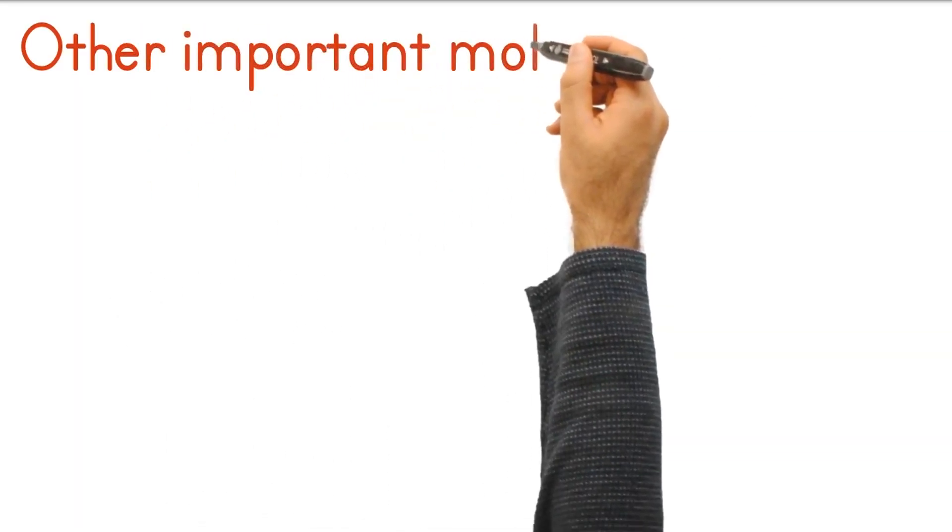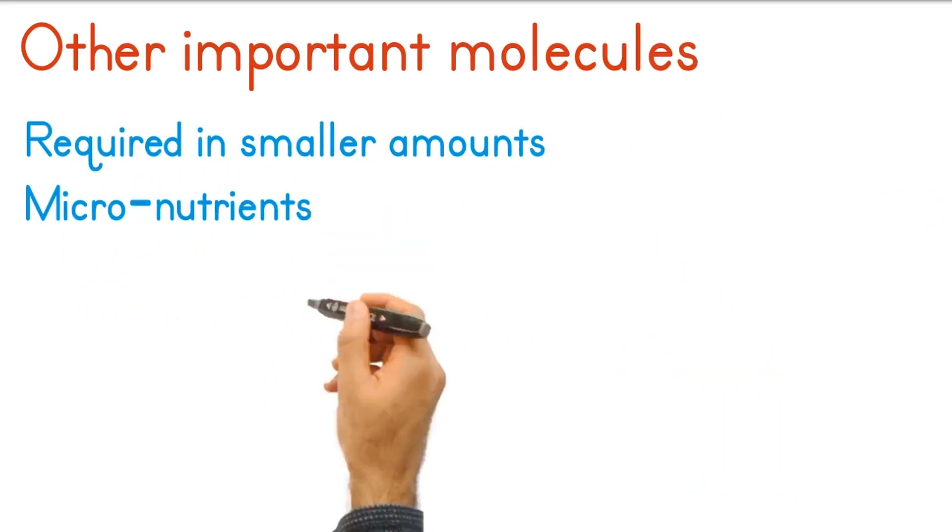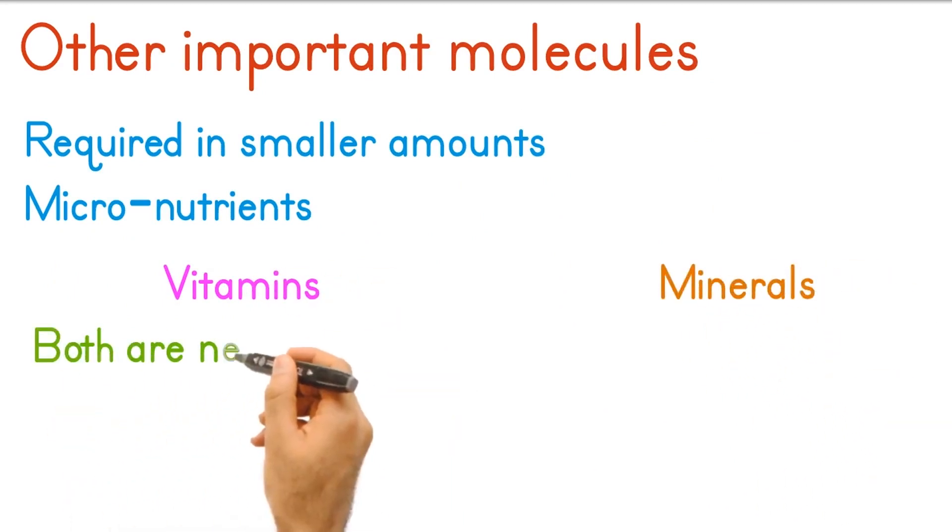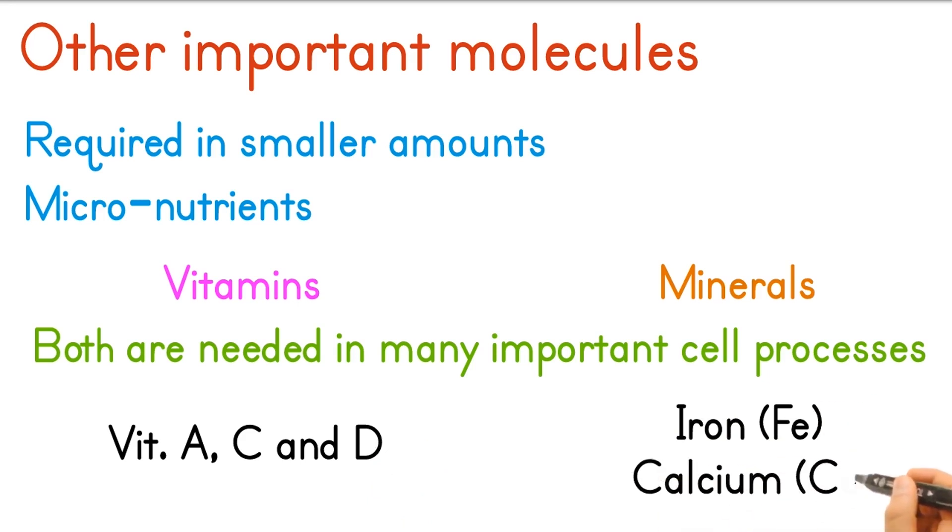Other important molecules in our diet. They are required in smaller amounts, known as micronutrients. They are vitamins and minerals. Both are needed in many important cell processes. Some examples you should know: vitamins A, C and D and the minerals iron and calcium.